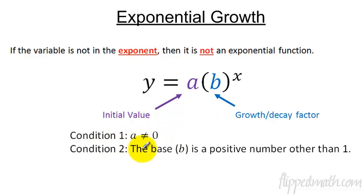A couple conditions with this is that A cannot be 0. If this was a 0 then the whole thing would become 0 and you would just get y equals 0. Okay that would be kind of dumb. So A cannot be 0. The initial value. Also the condition 2 is that the base must be positive. And it cannot be 1. So it's got to be some positive number. And it can't be the number 1. If it was the number 1 then 1 to the x would just equal 1. And those are the two conditions for exponential functions.